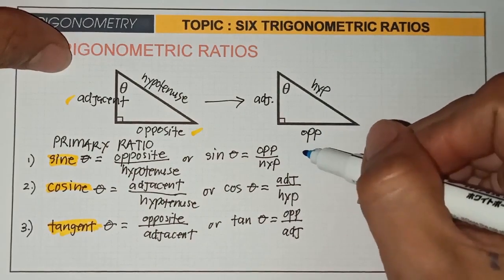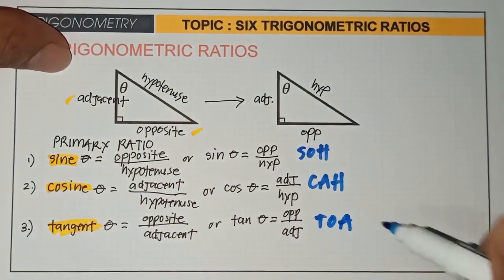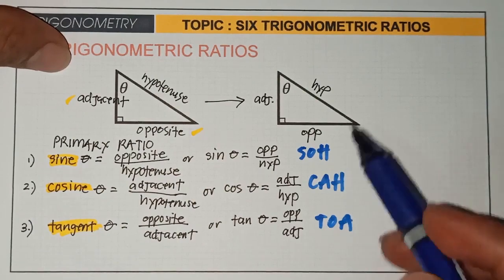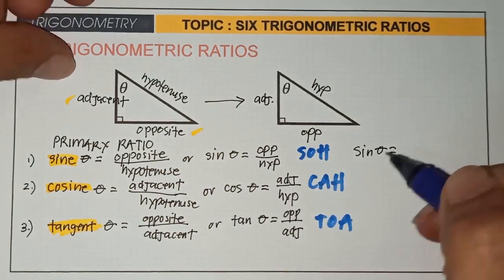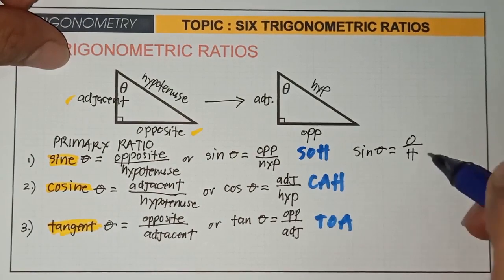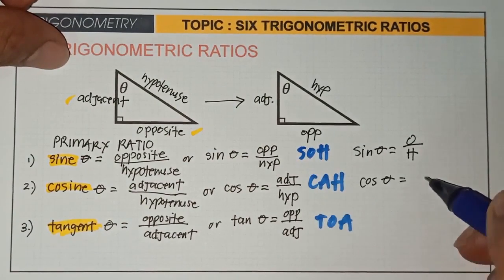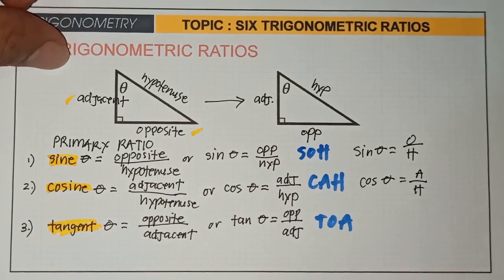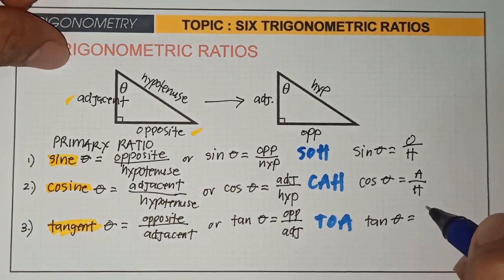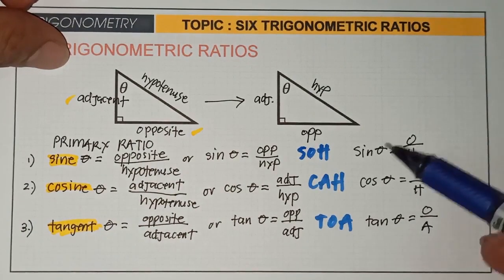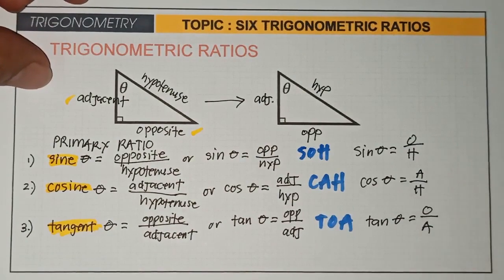To easily memorize the primary ratios, we can use the mnemonic SOHCAHTOA. SOH means sine theta equals opposite over hypotenuse. CAH means cosine theta equals adjacent over hypotenuse. TOA means tangent theta equals opposite over adjacent. This is an easy way to memorize the primary ratios of the six trigonometric ratios.